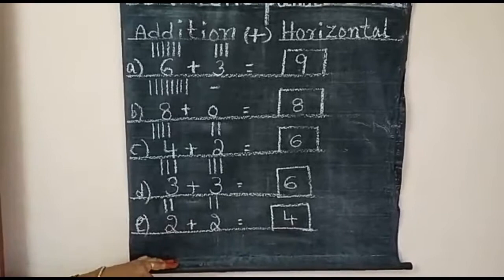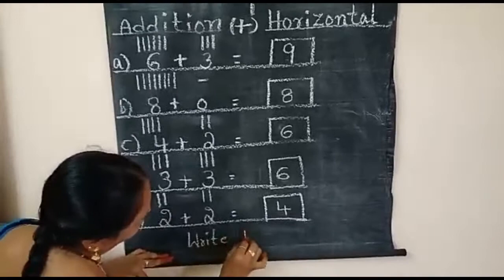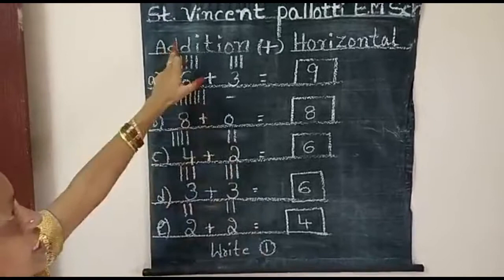Okay children. Write one time in your classwork. This addition — write one time. CW. Addition symbol. Okay children, thank you.